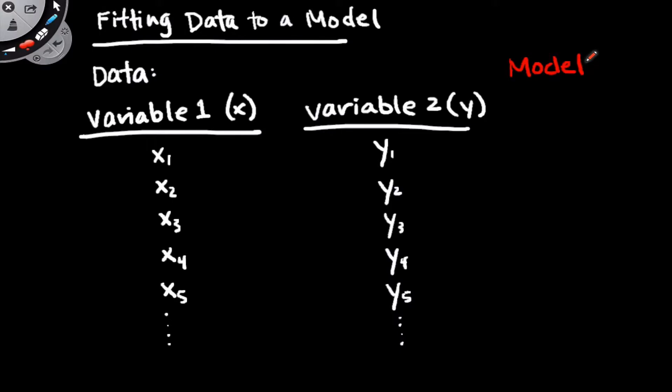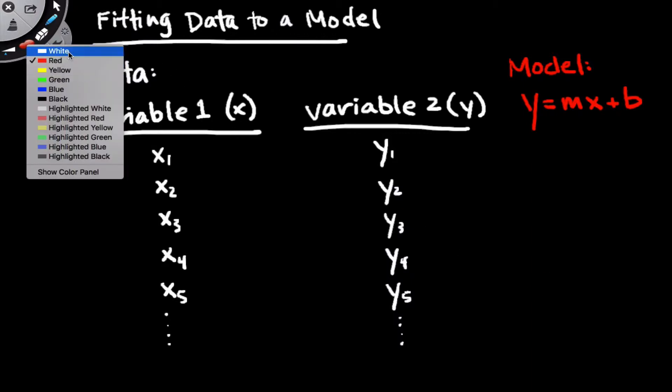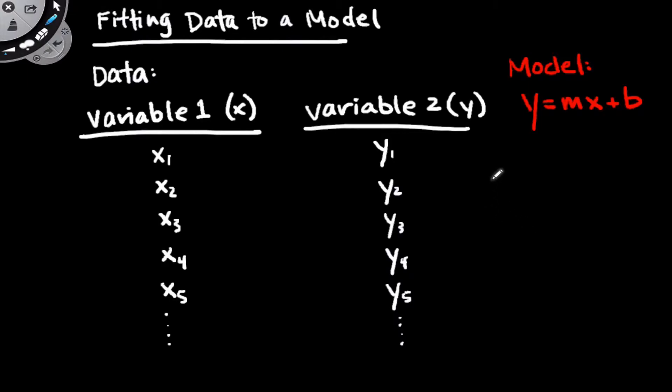So in general, one of the simplest types of models just uses a linear fit, meaning that y is equal to some constant m times x plus b, which is our y-intercept. This isn't the only type of model possible, but as we'll see a little bit later in the video, you can reduce a lot of more complicated models to this linear type of fit by modifying x and y.